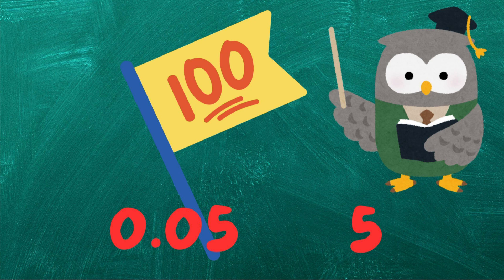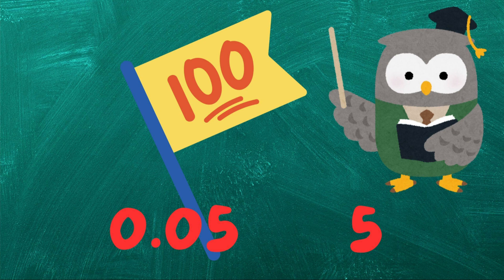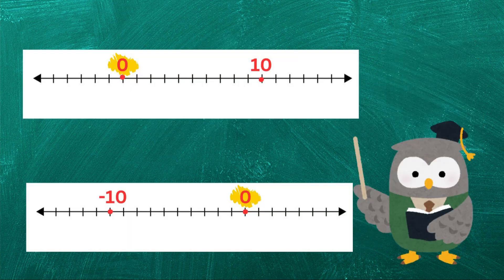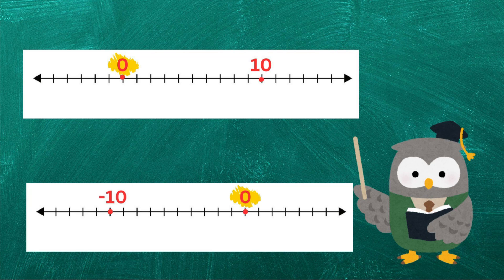Zero also plays a crucial role in negative numbers. When we see minus ten, the zero helps us understand that we're ten units below zero. It's like a marker that shows us where we are on the number line.